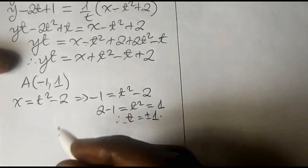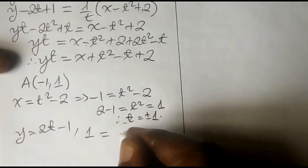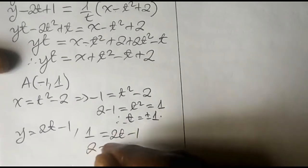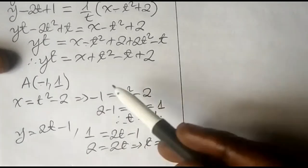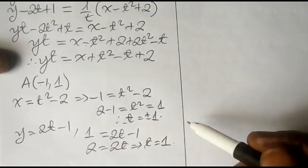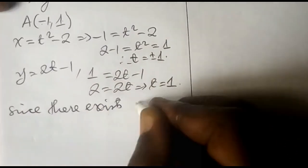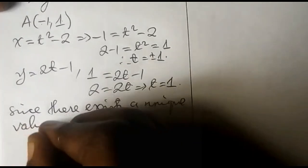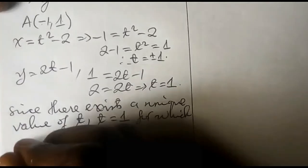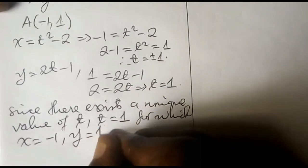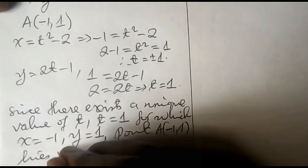For y: if y equals 1, then from y equals 2t minus 1 we get 1 equals 2t minus 1, so 2 equals 2t, giving t equals 1. There is a unique value of t, namely t equals 1, for which x equals negative 1 and y equals 1. Since there exists a unique value of t equal to 1 for which x equals negative 1 and y equals 1, point A with coordinates negative 1, 1 lies on the curve.